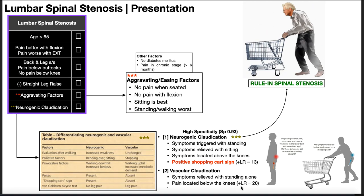If a person has pain below the knees, there's a positive likelihood ratio for vascular claudication of 20 — a huge likelihood ratio — making it more likely vascular than neurogenic. The positive shopping cart sign has a likelihood ratio of 13, still quite good. This constellation of neurogenic claudication signs and symptoms has a high specificity of 0.93, meaning if someone satisfies that constellation there's a 93% chance they have lumbar spinal stenosis.